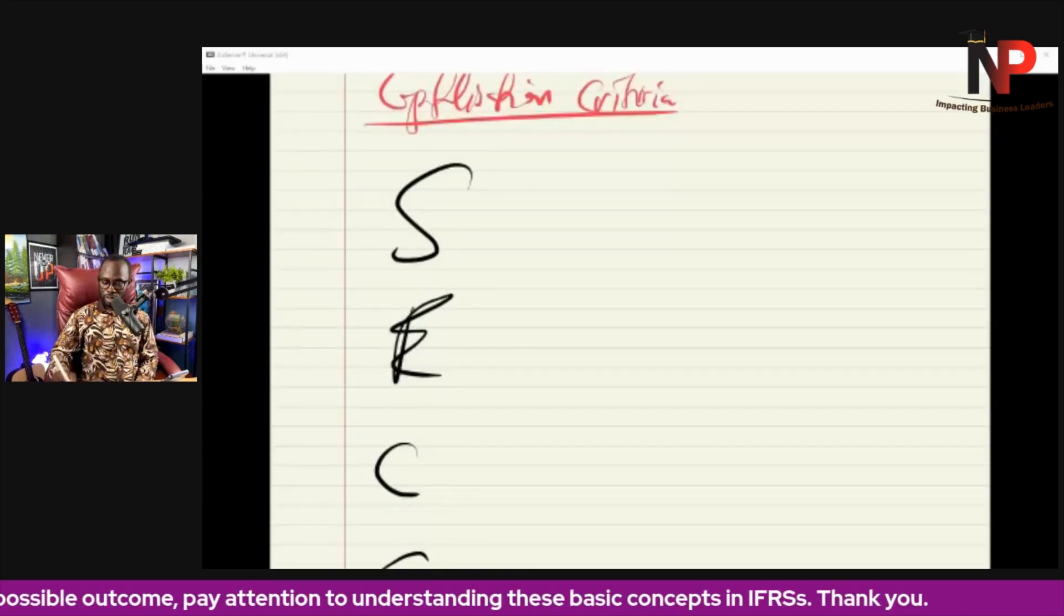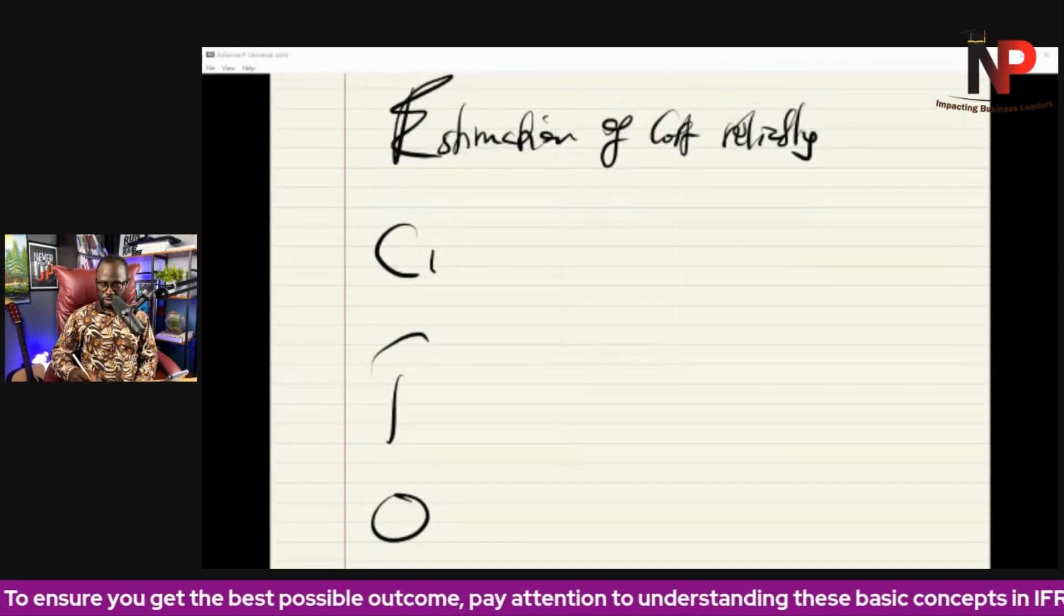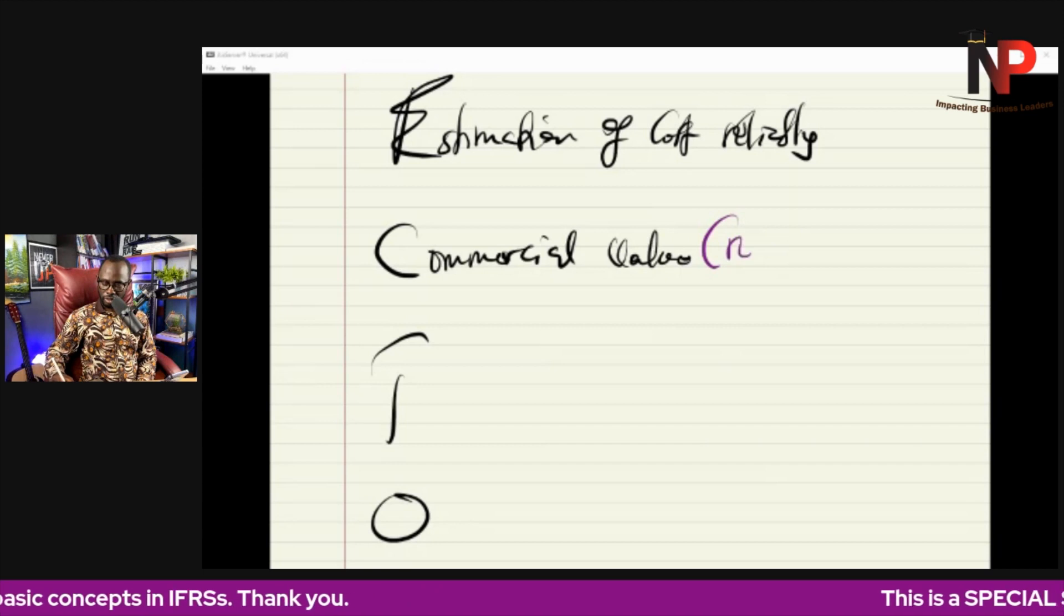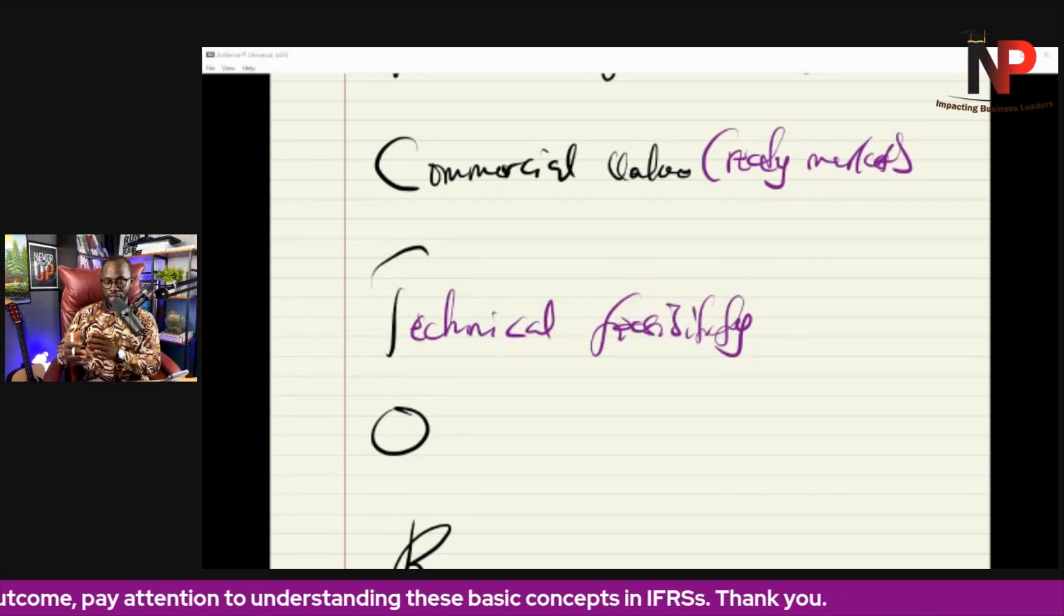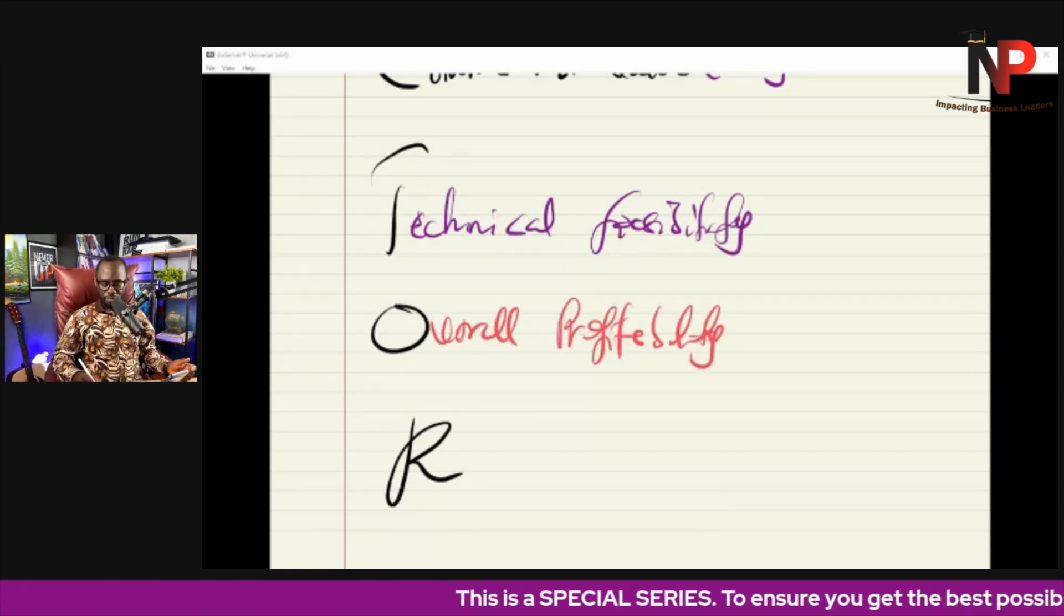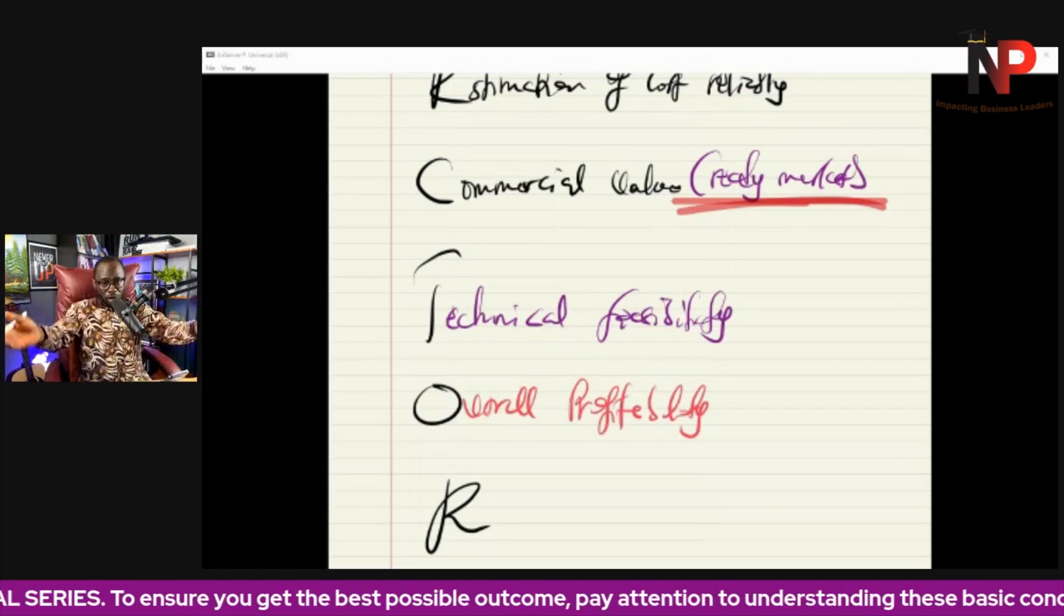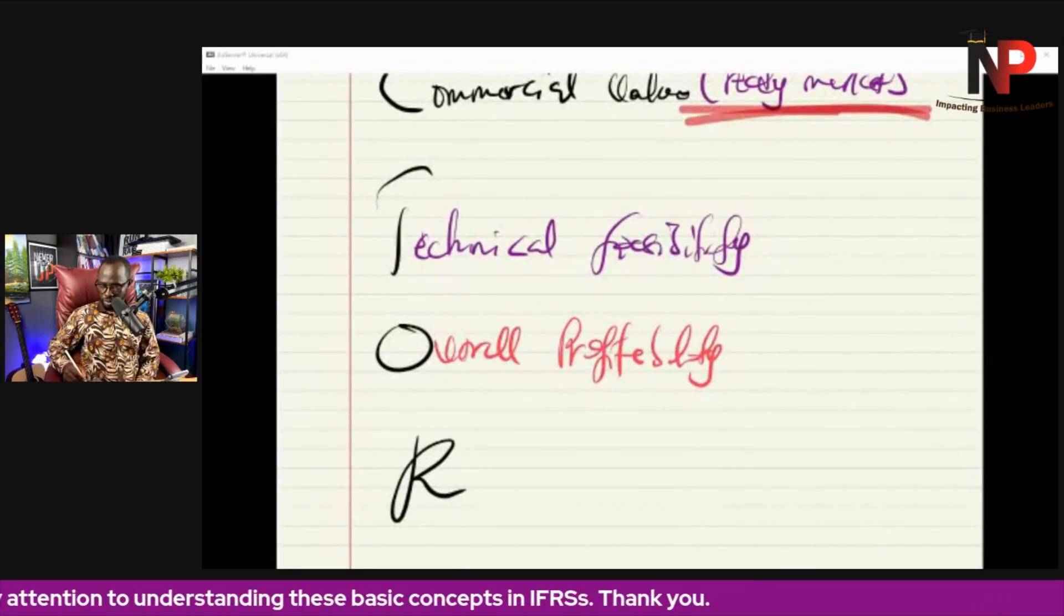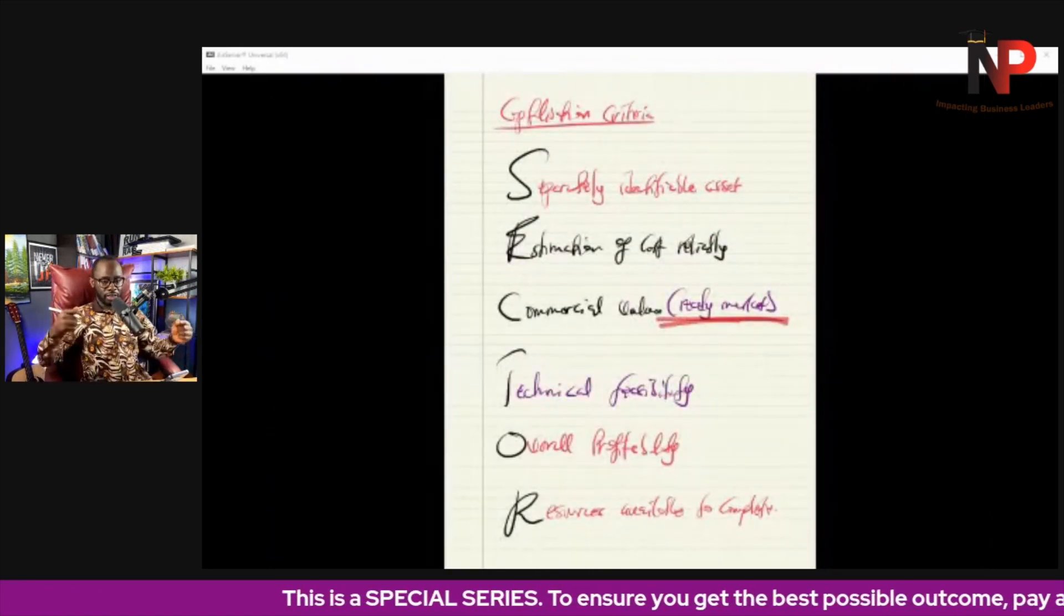What does that mean? S means it should be a separately identifiable asset. Two, we can estimate the cost reliably. Three, there is a commercial value. That means there is a market for what we are developing. There's a ready market for it. Four, it's technically feasible. In other words, it is something that can actually be done by the entity. O means overall profitability. Because there could be a ready market for what we are developing, but we are a for-profit making organization. And so if we don't make profit, then what is the purpose of what we are developing as an organization? Then R means that there are resources available to complete and make it ready for the market.